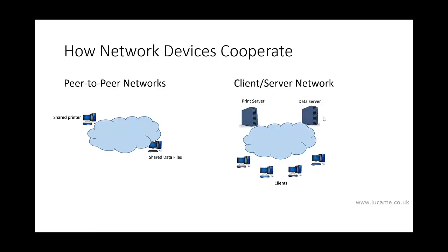In a peer-to-peer environment, each system is capable of offering services to other systems whilst also being able to request services from them. For example, system A may access data files held on system B — in this case A is the client and B is the server. However, system B can send print jobs for execution on system A's printer — in this instance A is acting as the server and B as the client. Peer-to-peer systems usually run operating systems and applications capable of being configured as either client or server.